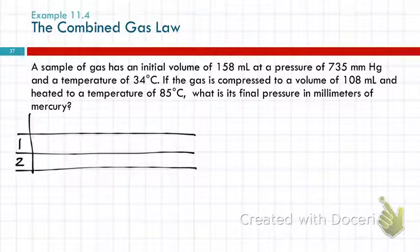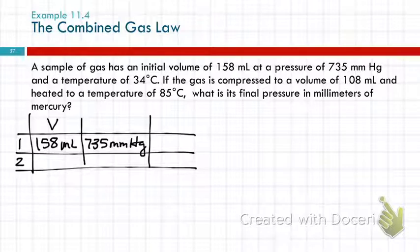First number I come to, 158 milliliters. Well, that's a volume, so I'm going to label that column V for volume. Next is 735 millimeters of mercury. That's pressure, so I'll call that column pressure. Temperature of 34 degrees Celsius. Is that a good unit for the temperature? No, it needs to be in Kelvin. So, 34 plus 273 is 307. 307 Kelvin.